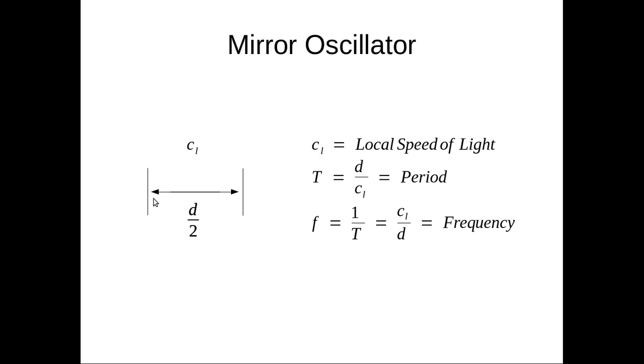The total distance the pulse travels as it travels from one mirror to the other and back is D. The time it takes to travel from one mirror and back is the period, T, D over CL. The frequency is 1 over T and is equal to CL over D.